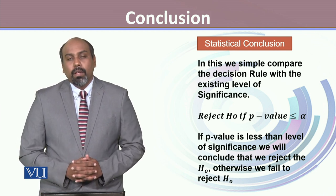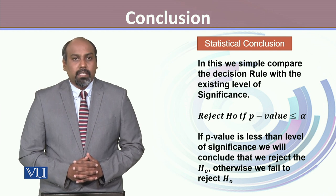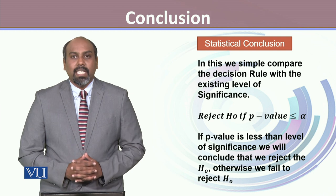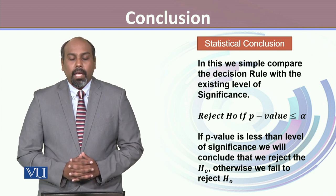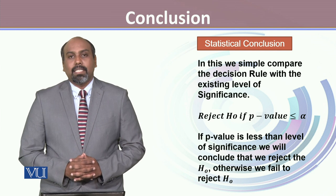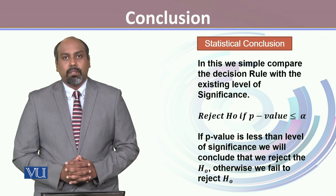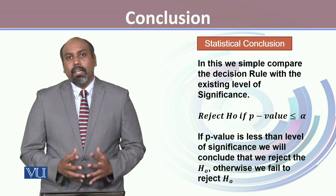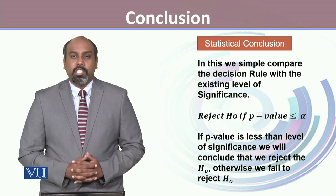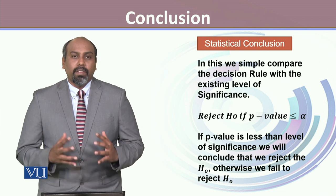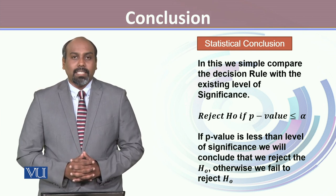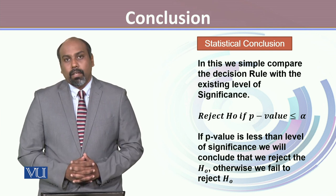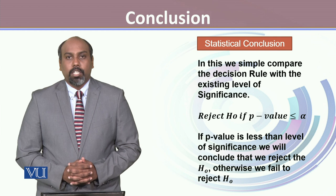Our decision rule states that we reject H0 if the p-value is less than or equal to alpha. If the p-value is less than or equal to the level of significance, we can confidently say that H0 should be rejected. However, if the p-value is greater than alpha, then we fail to reject H0.